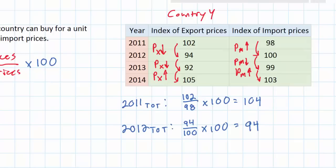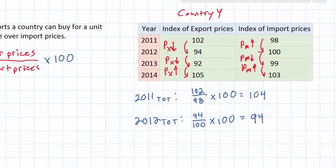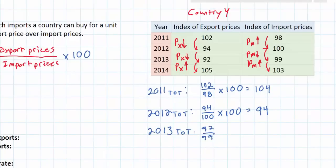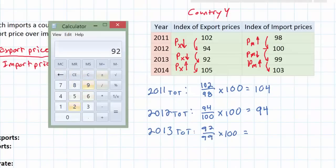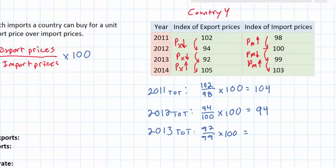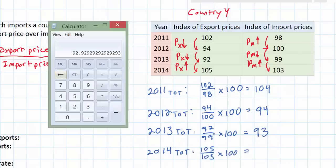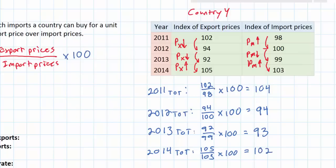Let's go on to 2013 and 2014 quickly. I've rounded my numbers to the nearest whole number. What we have is a set of values that represent the changes in country Y's terms of trade between 2011 and 2014. Let's do some simple analysis of these numbers to determine what exactly is going on in country Y's trade with the rest of the world.